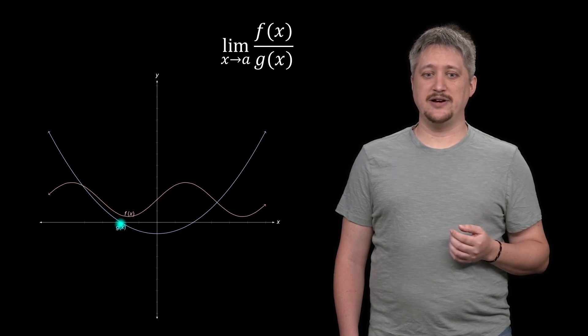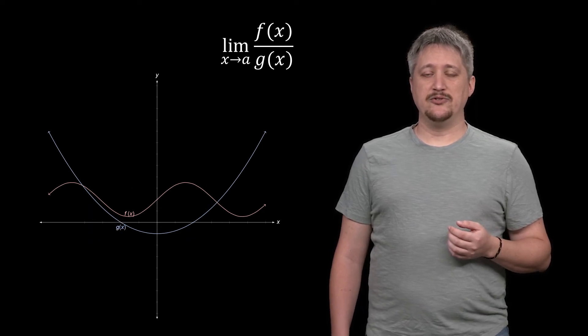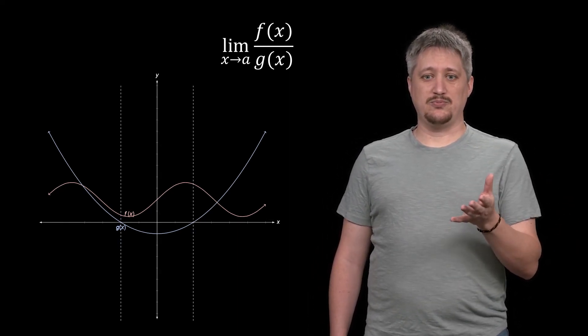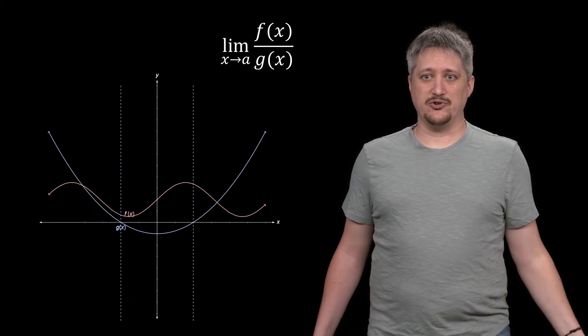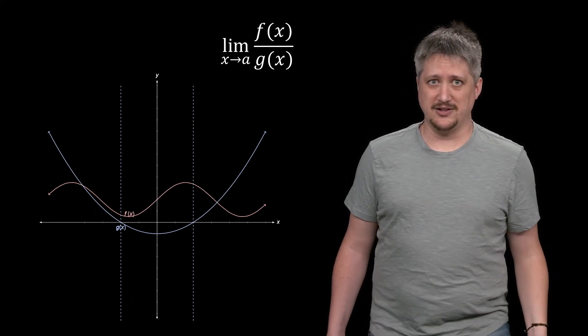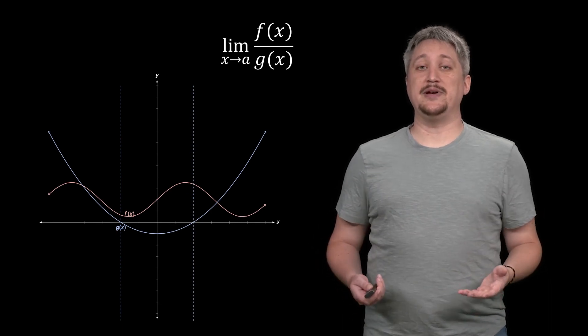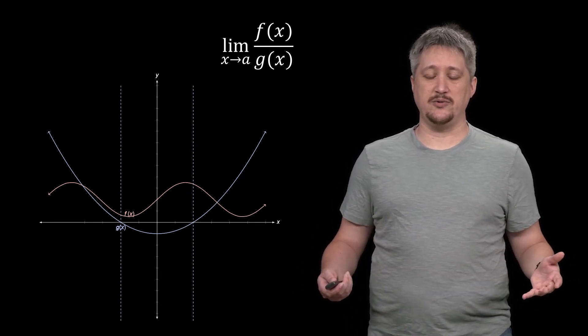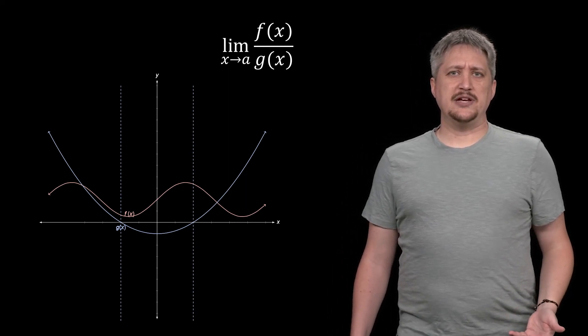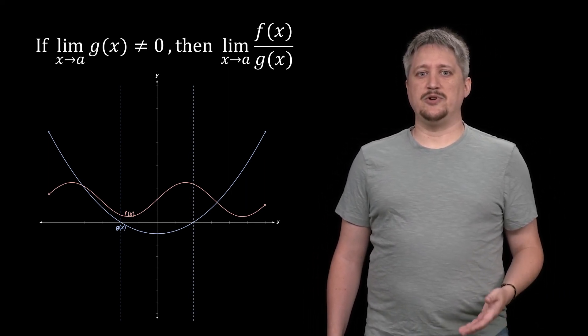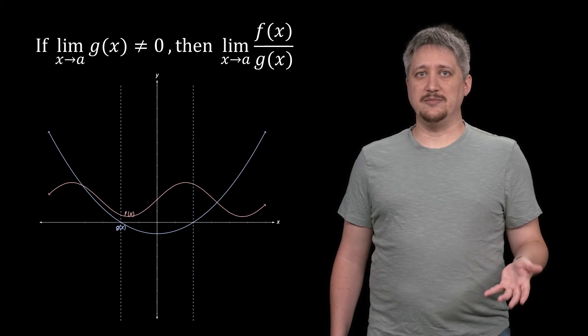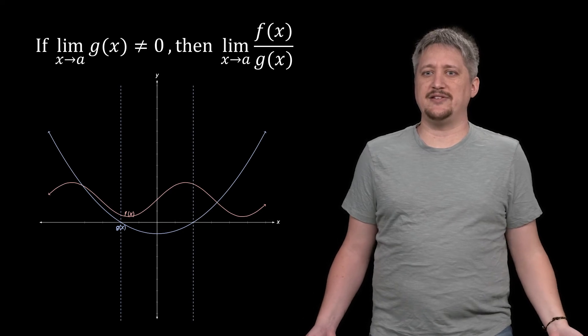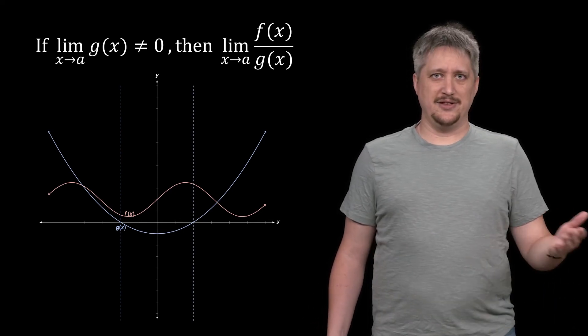Hopefully when you're thinking about this, it should pop into your head: whenever you see a fraction you want to worry about whether or not the bottom of that fraction is zero. There are definitely places where g is zero. So in particular, when we try to do a division we're going to run into problems at these two values because we're trying to divide by zero. That's not going to work. So we are introducing domain restrictions where we used to have just straight up always everywhere continuous.